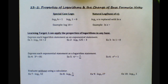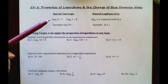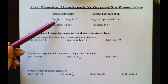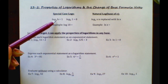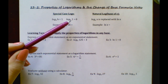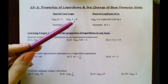Today we are going to do section 23-2, which is properties of logarithms and the change of base formula. Before we start, a couple of things we need to go over are special case logs. If you have a log with a base that has the same value as the argument, your logarithm will always equal 1. If you have a log base of a number of 1, it will always equal 0.